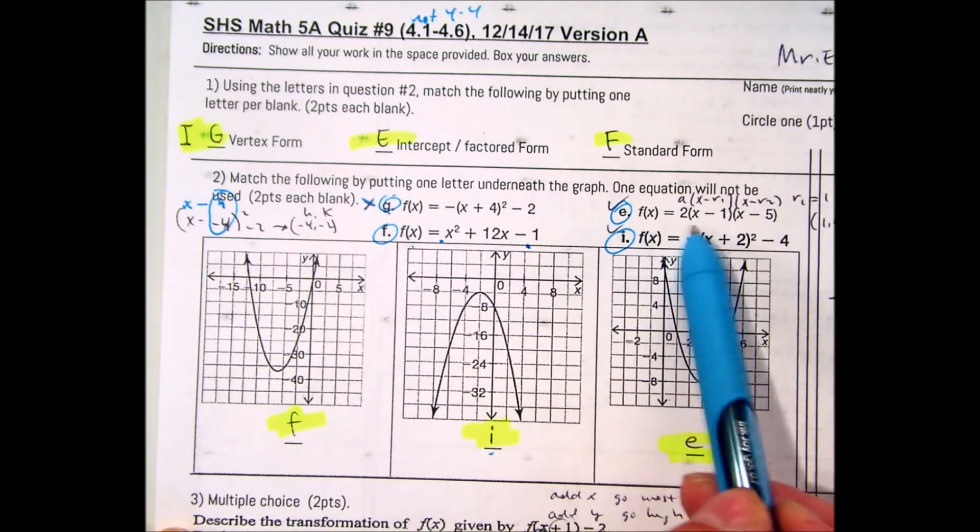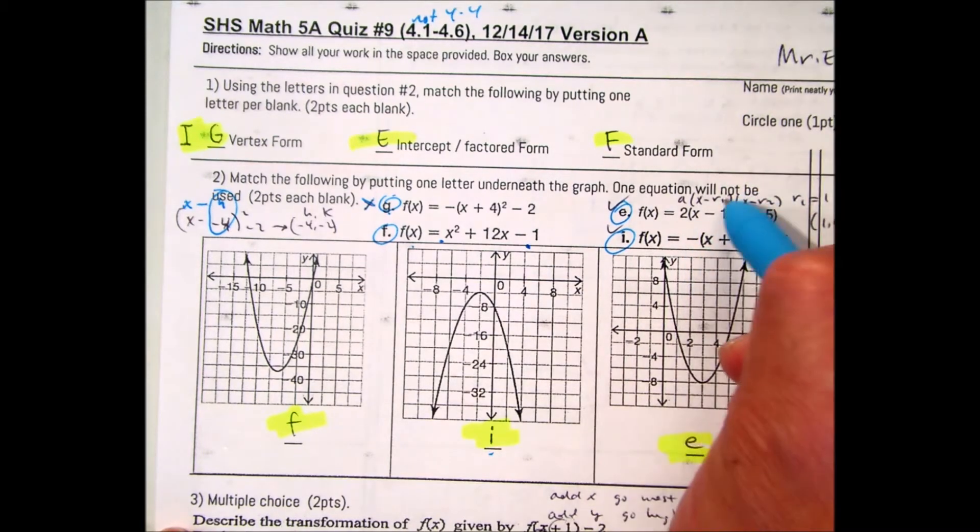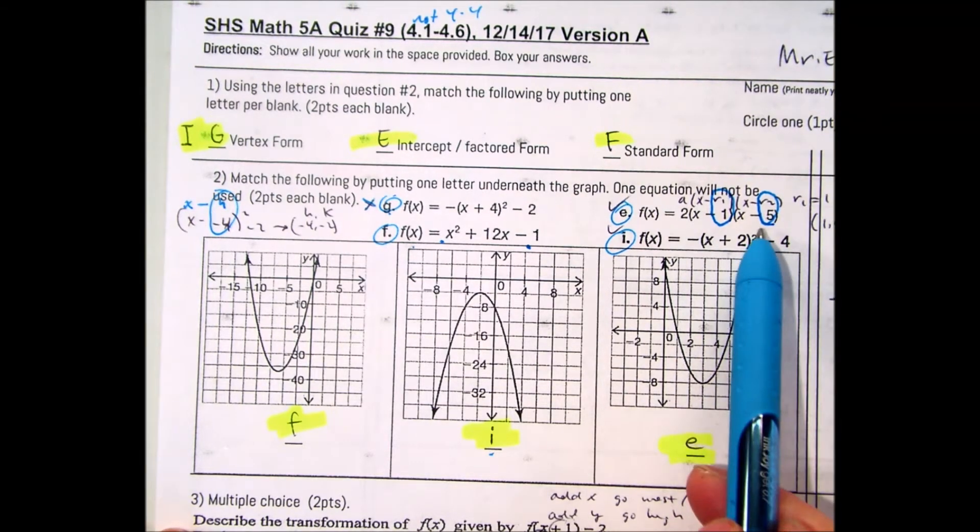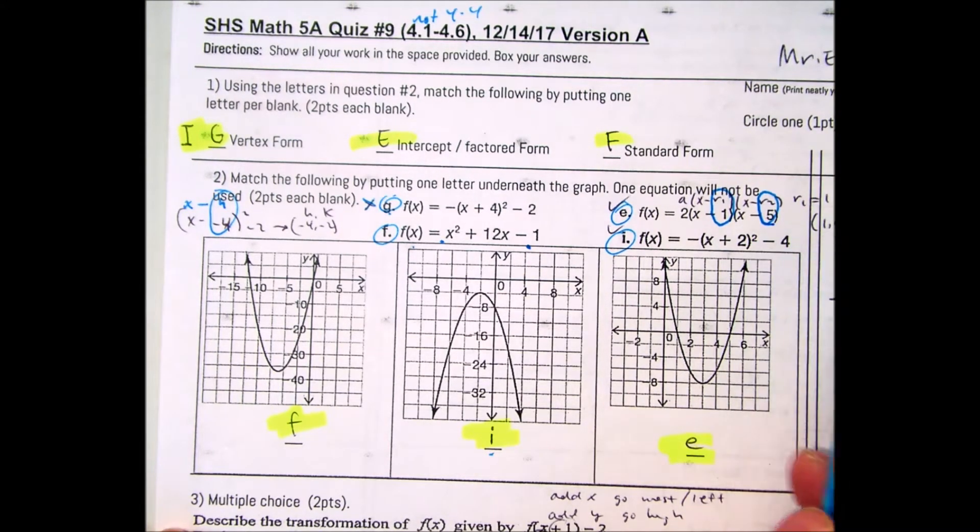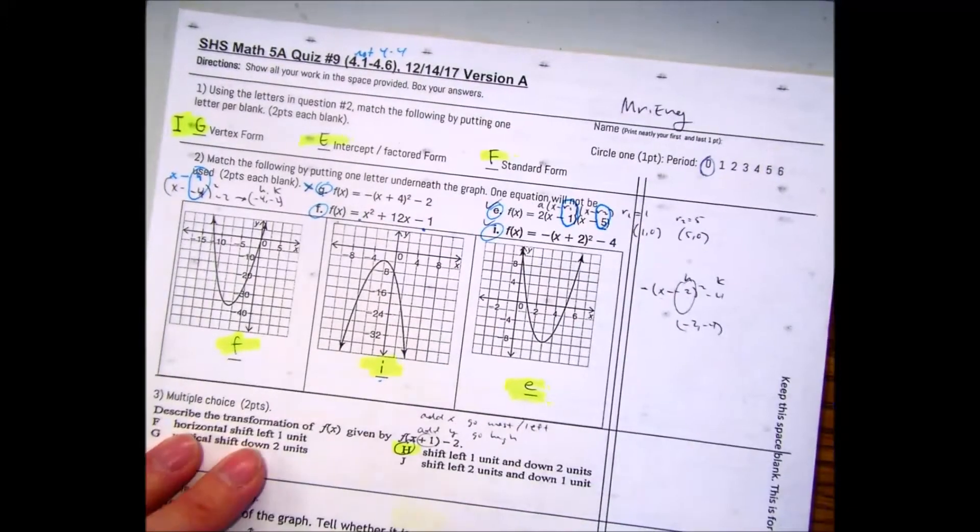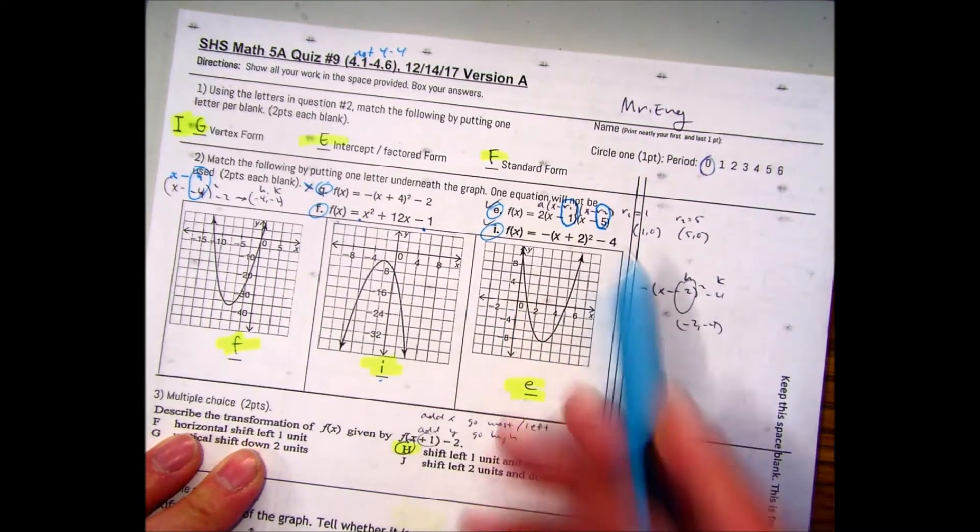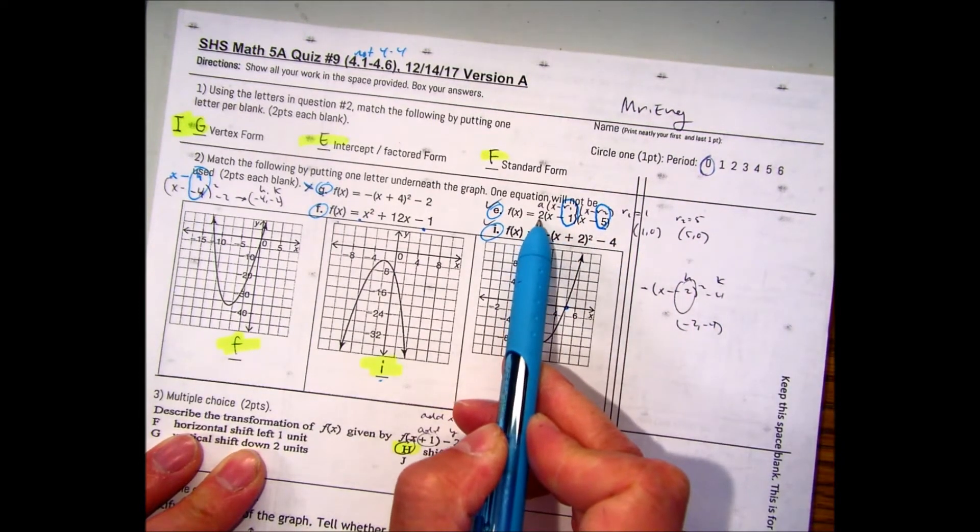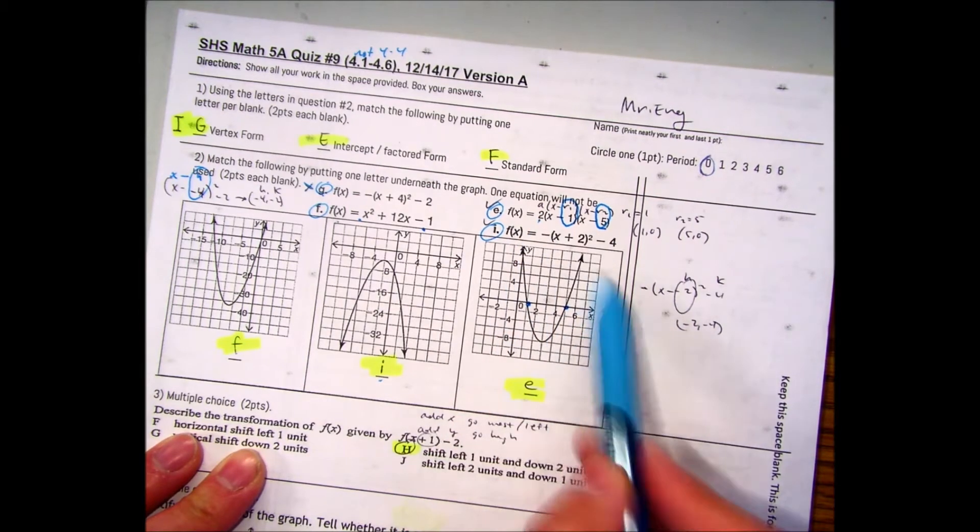E is in factored form. Remember here my r value would be positive 1. And my r2 value, the second root, is going to be 5. So 1, 0, and 5, 0. Here's 1, 0, here's 5, 0. And it's opening up because it's positive. So this would be letter E.